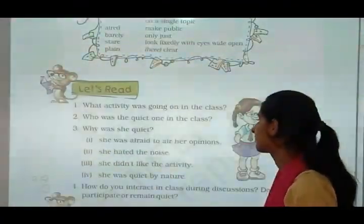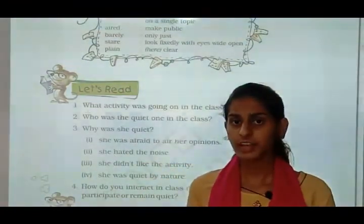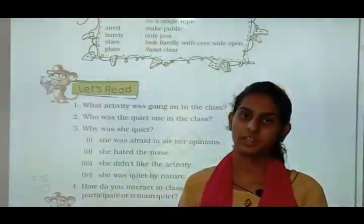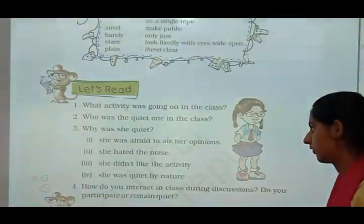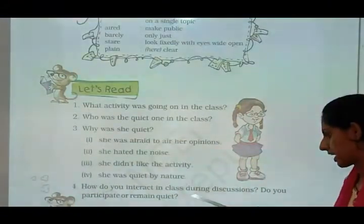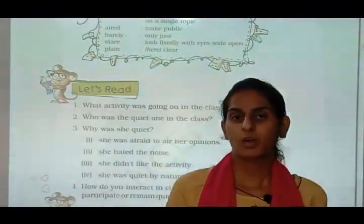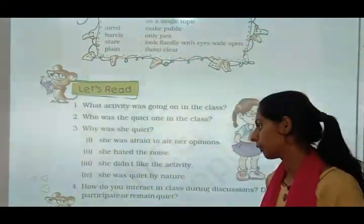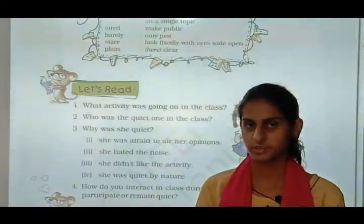Now let me see question answers. What activity was going on in the class? Discussion on a topic was going on in the class. Who was the quiet one in the class? Jane was quiet by her nature. How do you interact in class during discussions — do you participate or stay quiet? Some students talk, some give opinions, some listen silently. This is the answer you have to give. I hope you learn the story — thank you.